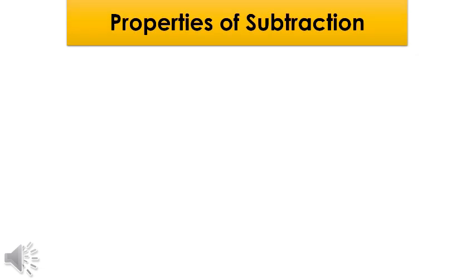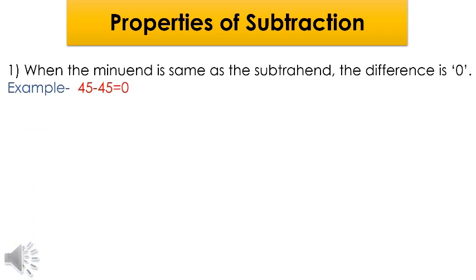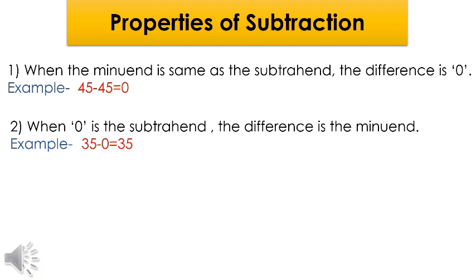Let us revise the properties of subtraction. Property one: subtracting a number from itself. When the minuend is the same as the subtrahend, the difference is zero. For example, if we take away 45 from 45, the result will always be zero. Property two: subtracting zero from a number — in this property, zero is always taken as the subtrahend.